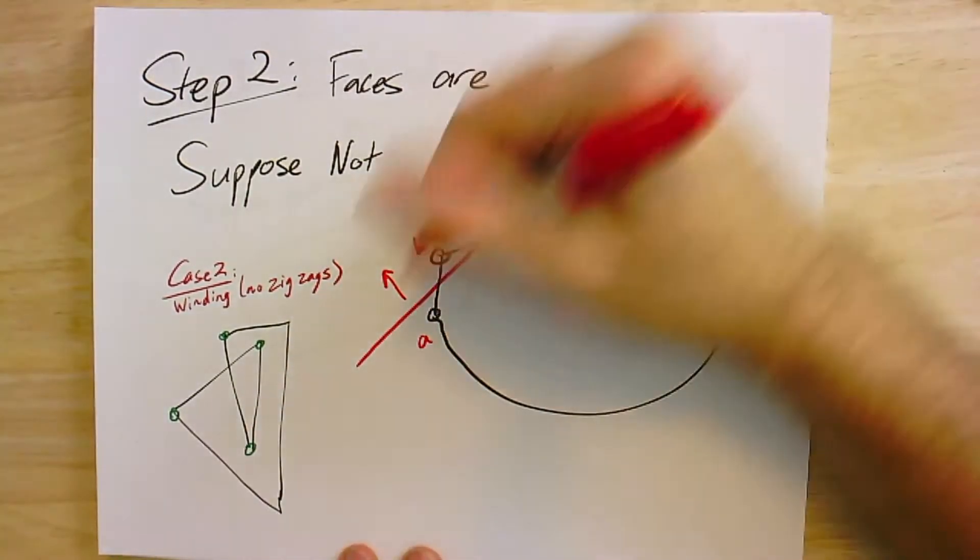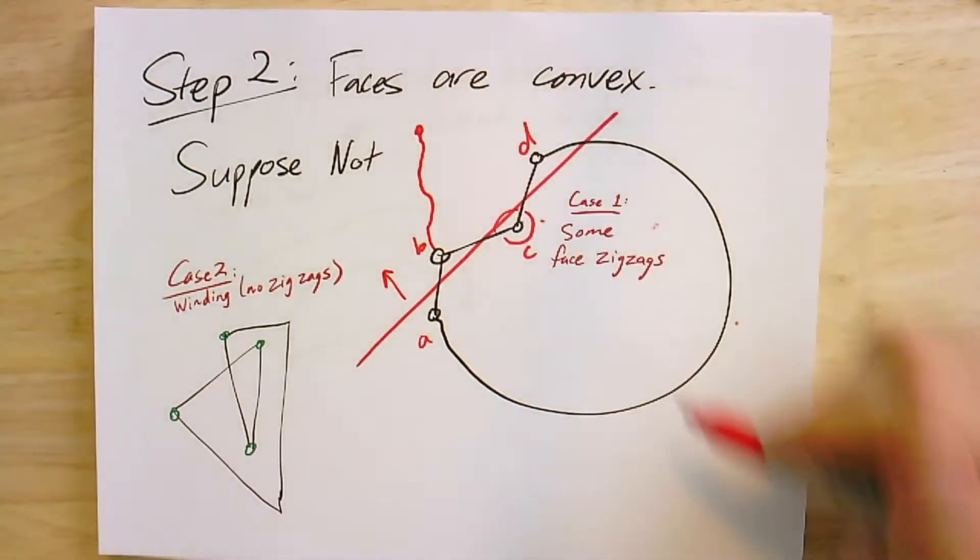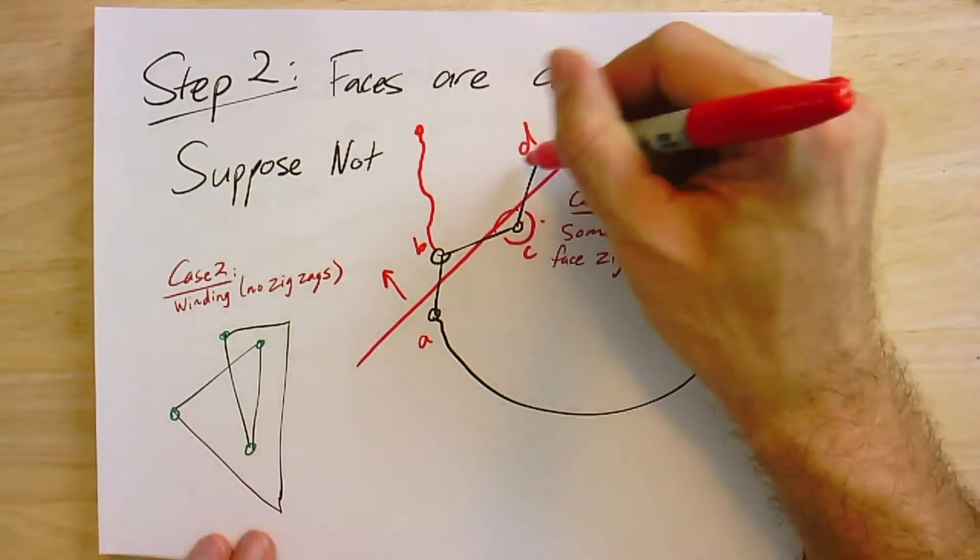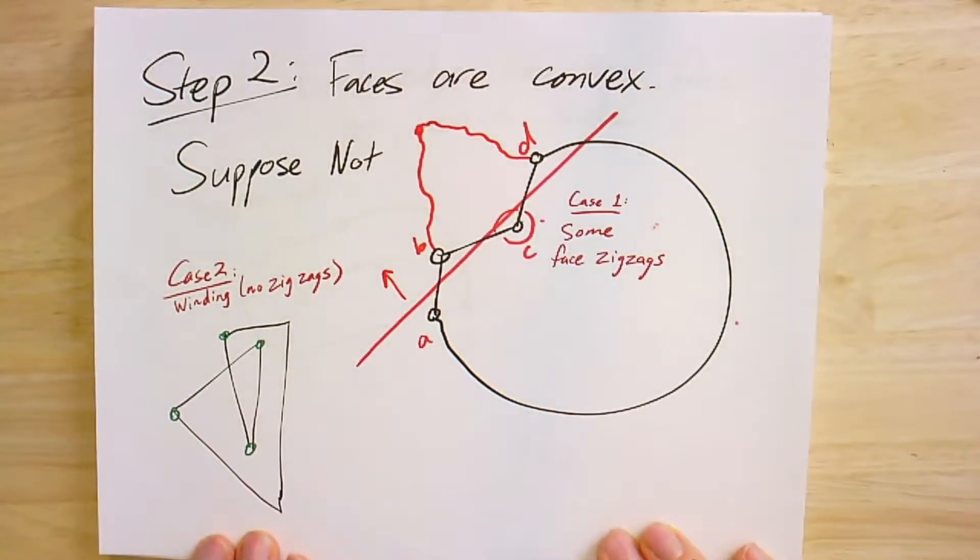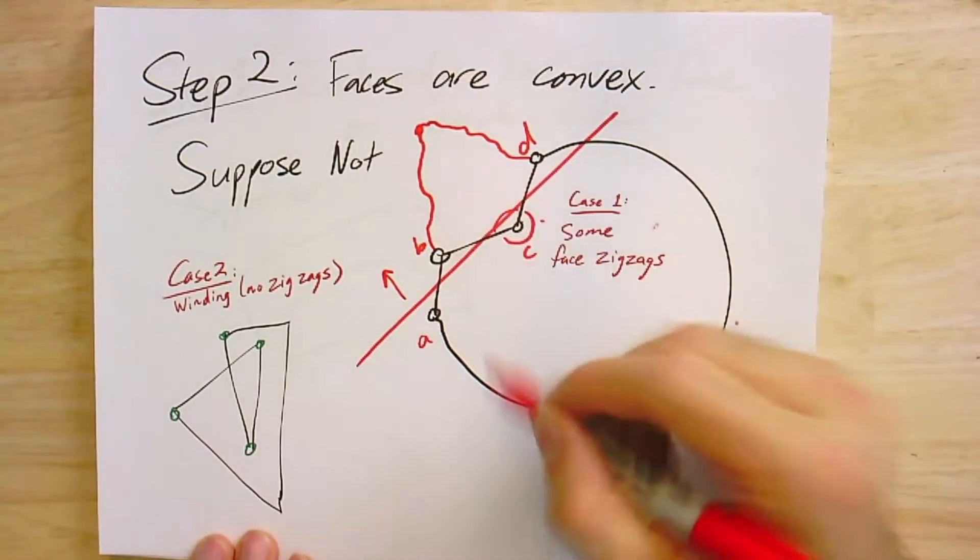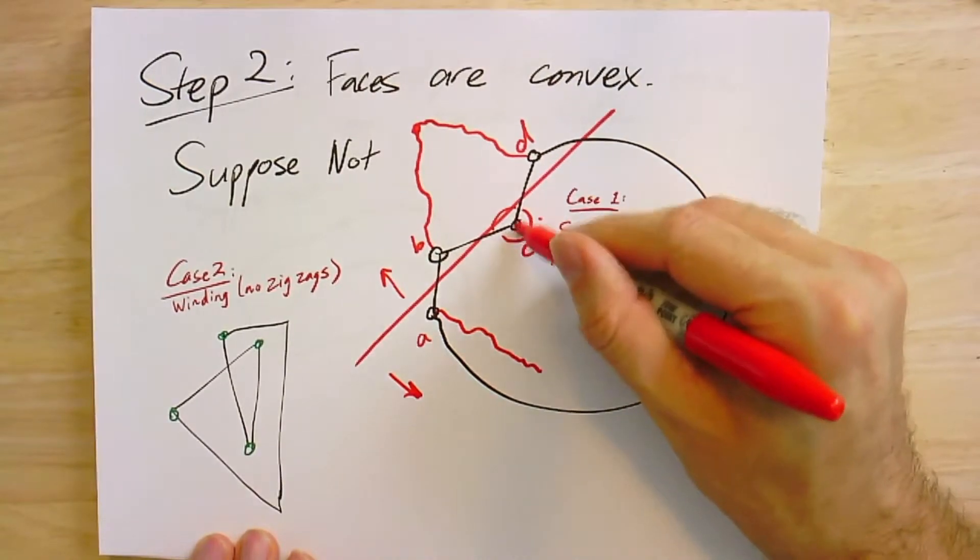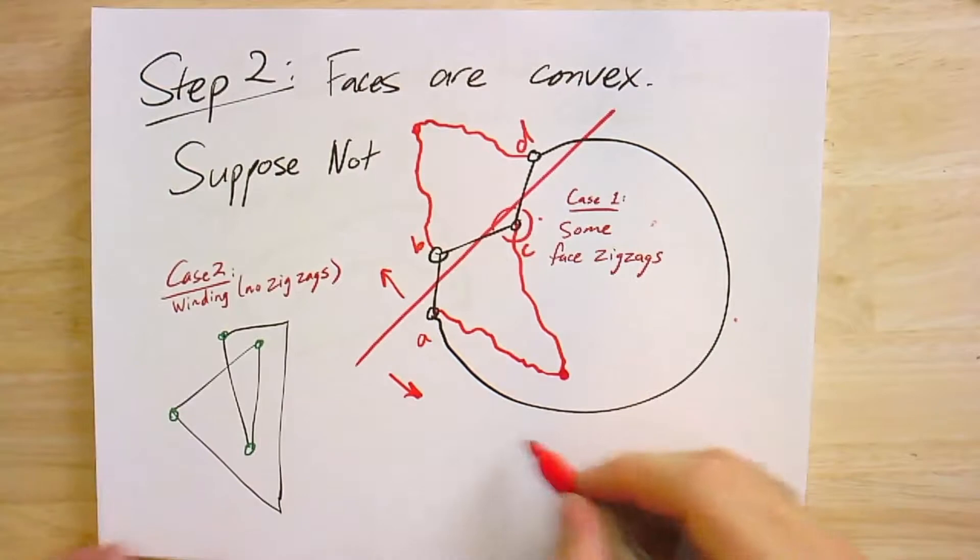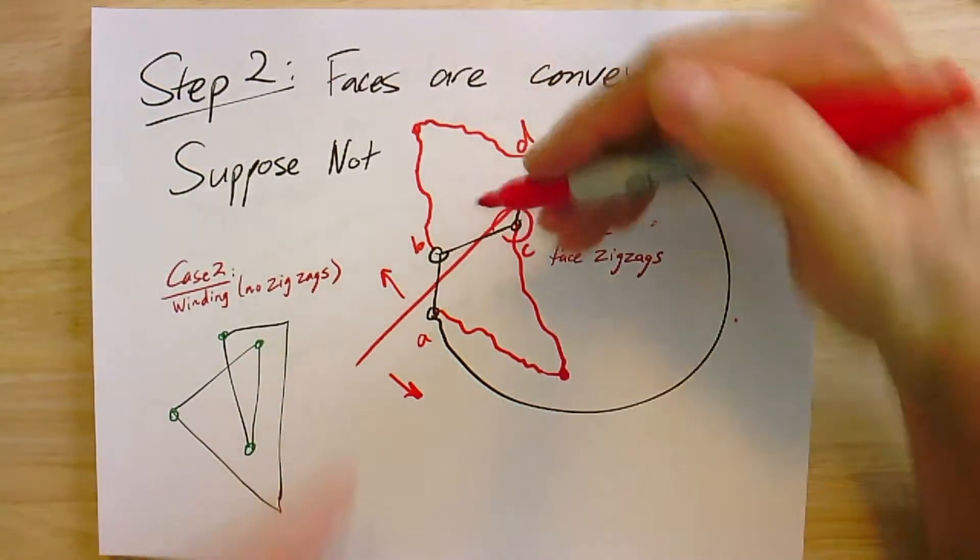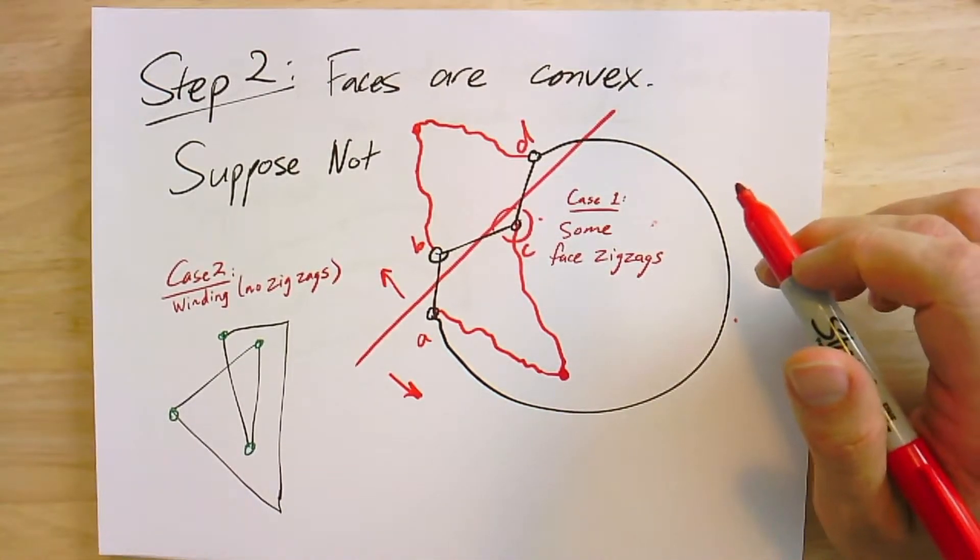For B, I can find a monotone path to the farthest point in that direction. From D, I can also find a monotone path to that same farthest point. In the other direction, I can find monotone paths - they'll end at the farthest point in this direction. If that farthest point is not unique, you can perturb this line slightly to make it unique. So what have we done?